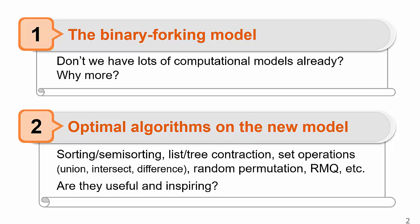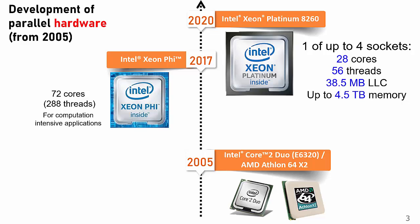Starting from 2005, we have the first commodity multi-core CPUs. After 15 years,